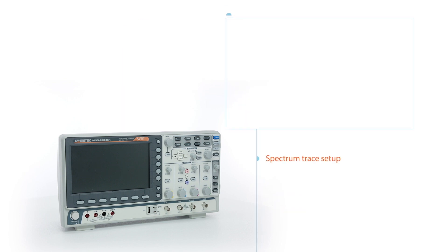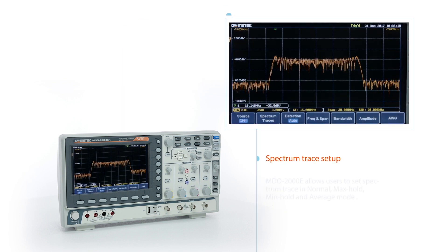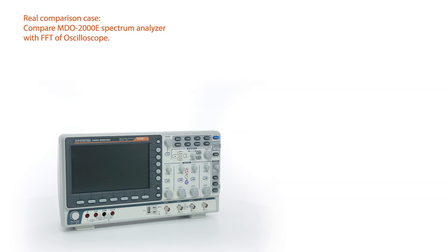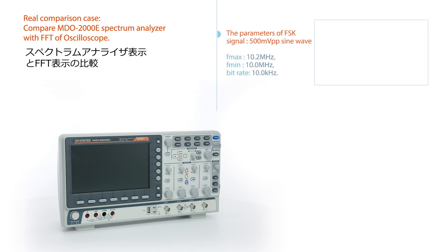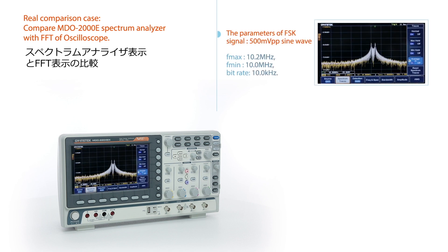The MDO-2000E allows users to set spectrum trace in normal, maximum hold, minimum hold, and average mode. In FSK testing, users can clearly identify the maximum frequency and minimum frequency from the spectrum analyzer.